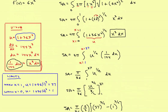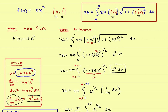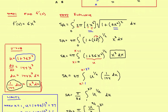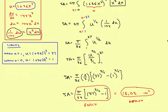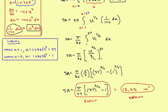Looking back at the problem: starting with the original function, step one is to find the derivative. Then plug both the original function and the derivative into the formula. At that point it becomes a matter of evaluating the integral, which turns into a u-substitution problem. Do your u-substitution, change the limits, run through the math, and you'll come up with the exact or approximate answer. That's an example of a surface area of revolution problem, and you'll want to look back at the arc length problem because the two are very closely related.